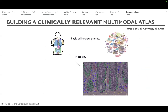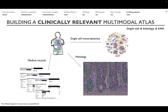On top of single-cell transcriptomics and histology, Tabula Sapiens v2 will include more comprehensive, fully anonymized medical records to be shared with the community, empowering researchers to leverage this large-scale resource — looking into gene expression and driving hypotheses about the relevance of findings for given medical conditions.